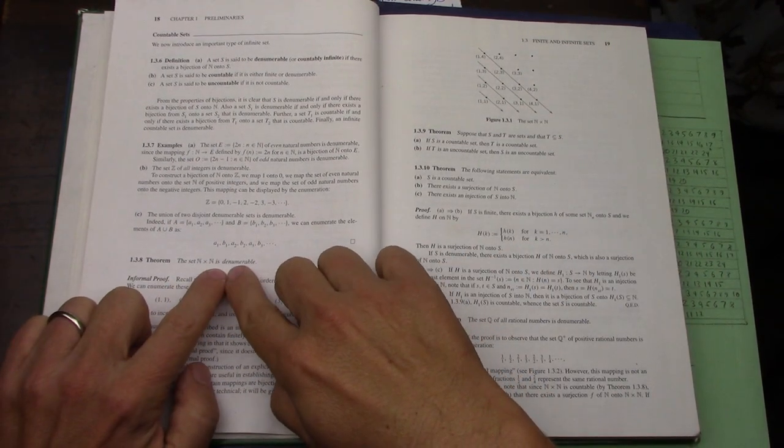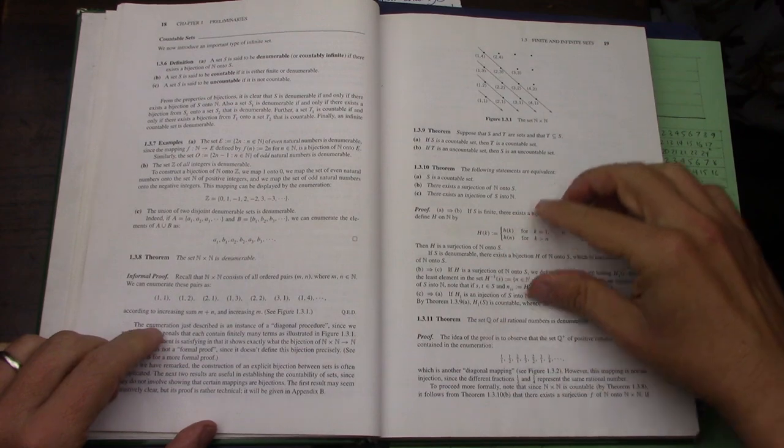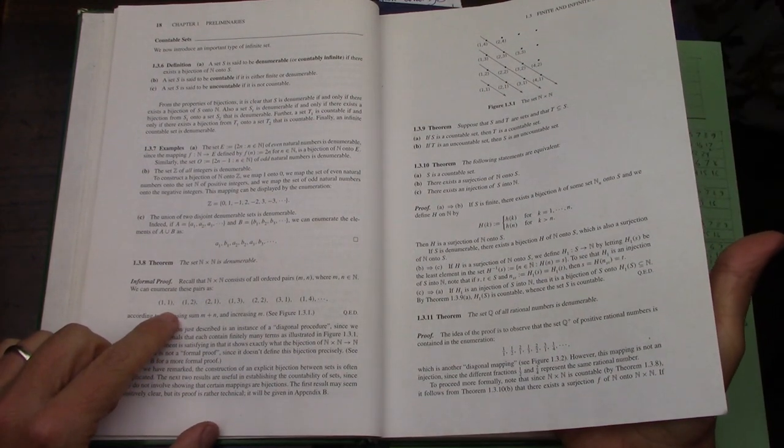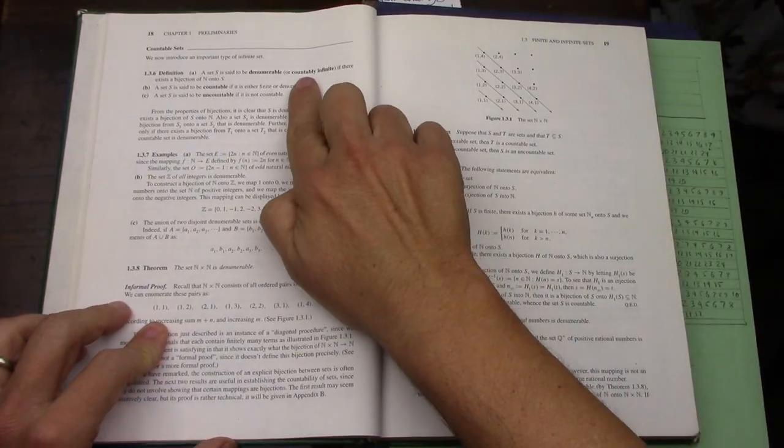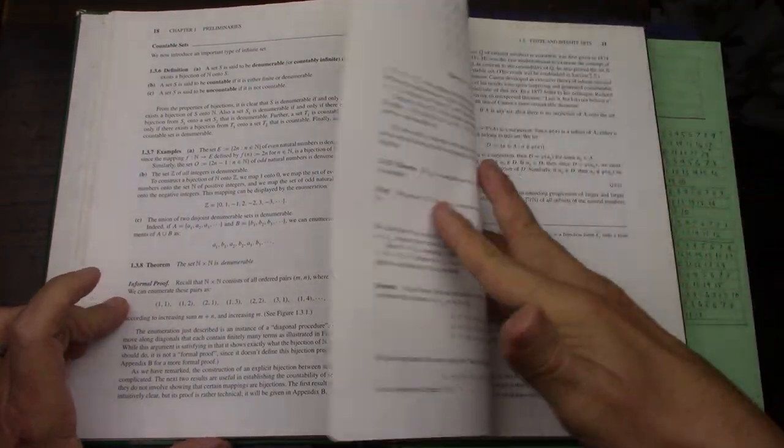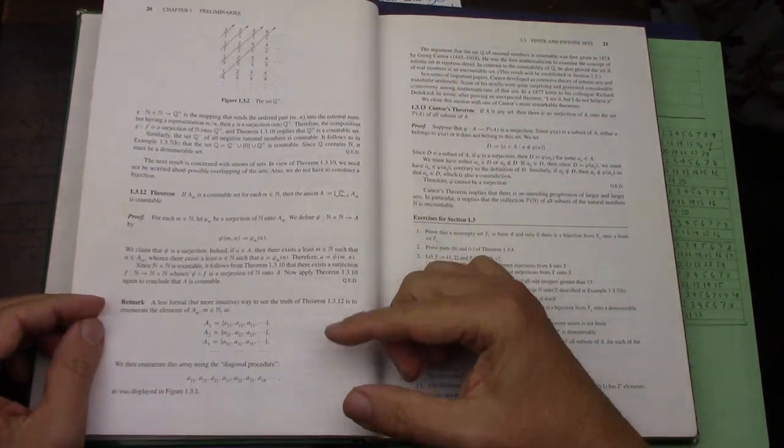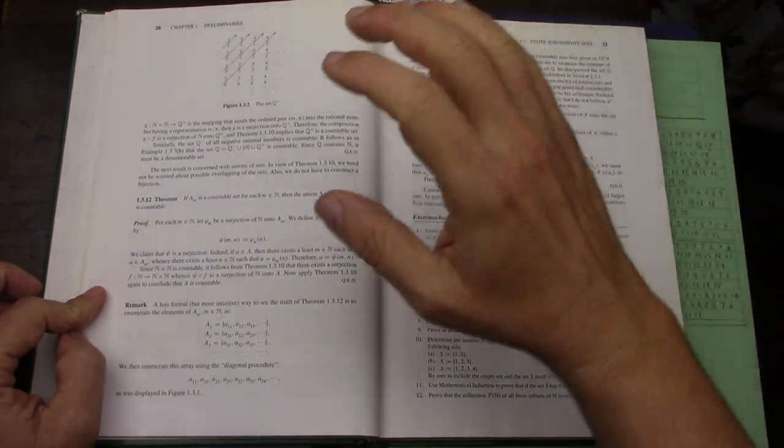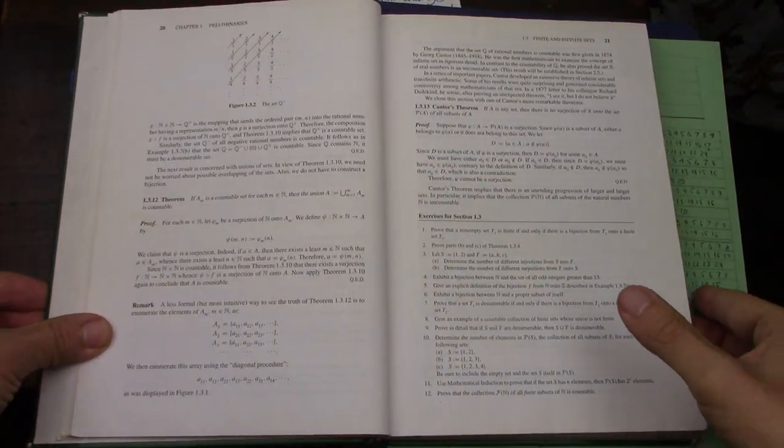N by N is denumerable or countable. Infinitely countable. I'm sorry, countable. What am I talking about? Countably infinite. There it is. These pages I found were very well done. Very interesting to follow. And I learned a lot. It's a great book. Chapters 1 and 2.